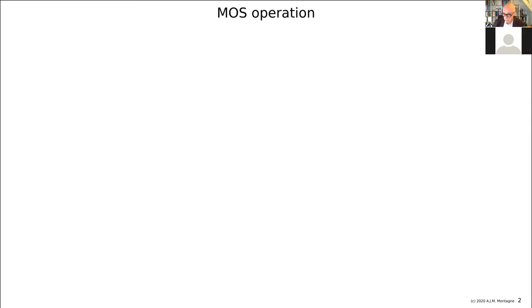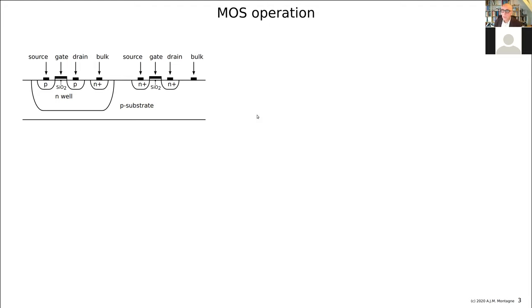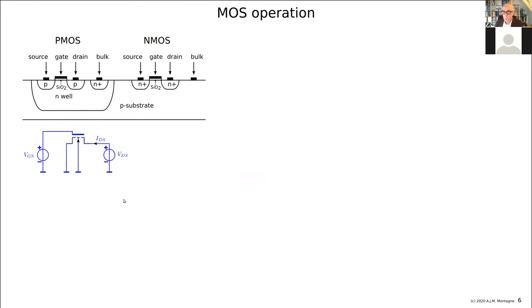Let's start with MOS operation — the physical operation of a MOS. I hope you all know it, but consider this a short recap. Here we have a very simple cross section of a CMOS IC made in a CMOS process. Here we have the PMOS, made in an N-well, and the NMOS is displayed on the substrate. This is the cross section. Usually we have a positive voltage on the drain and a positive voltage on the gate, and we describe the drain-source current as a function of the drain-source voltage and the gate-source voltage.